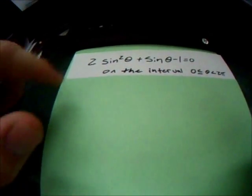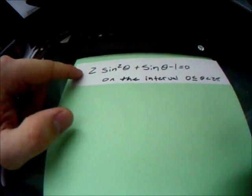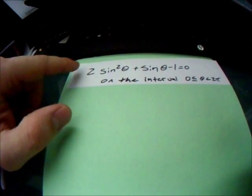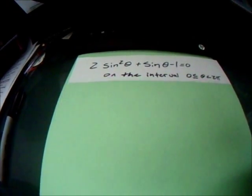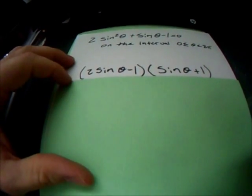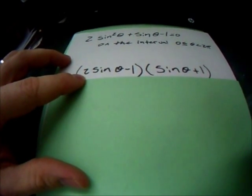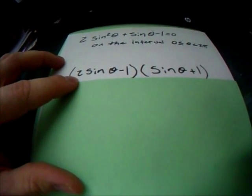So our first step is we're going to factor 2 sine squared theta plus sine theta minus 1. So we get 2 sine theta minus 1 times sine theta plus 1. This is a little bit easier to work with.